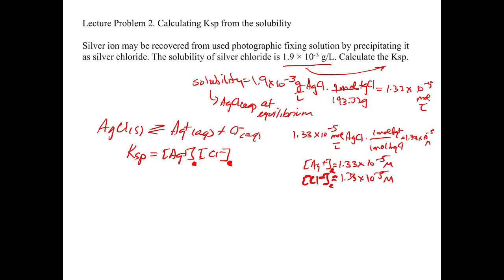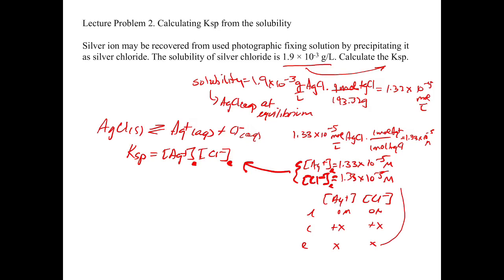We'll look at a case where that's not true in a moment. If you were to write an ICE table, you don't have to for this type of problem since we already have the equilibrium concentrations. But if you did, you'd start with 0 molar and 0 molar, add plus x and plus x, and end with x and x — confirming both ion concentrations are equal, consistent with the stoichiometry.